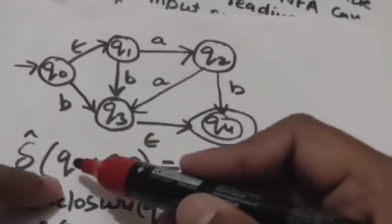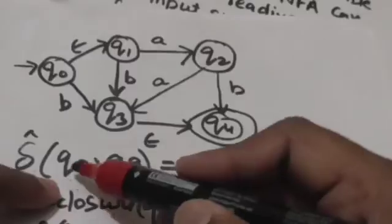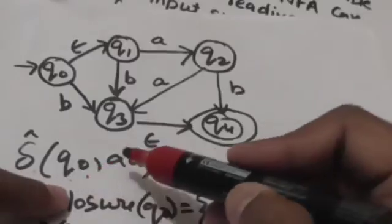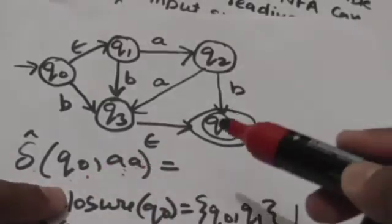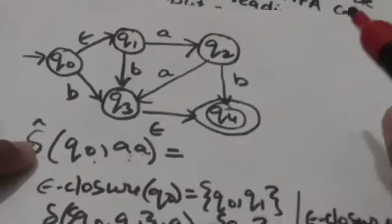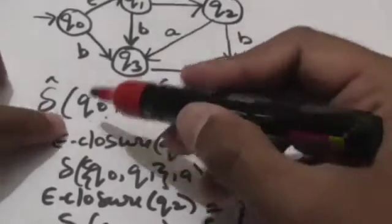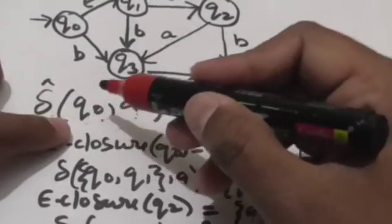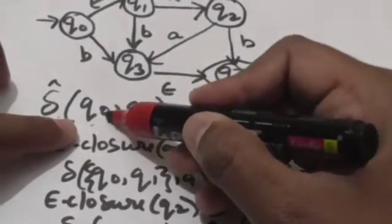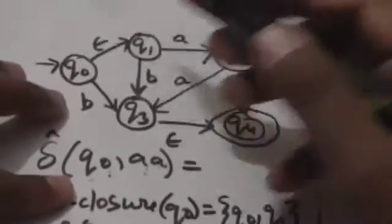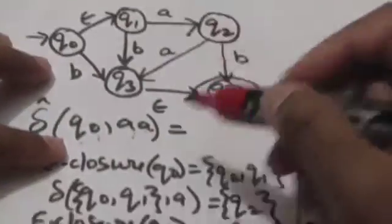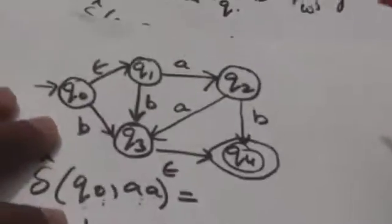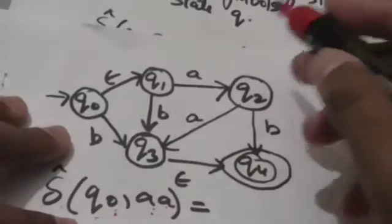We have to find the output of the extended transition function for state Q0 and a string of input symbols AA. First, we will find the empty closure of state Q0. The empty closure of state Q0 will contain two states: Q0 and Q1.